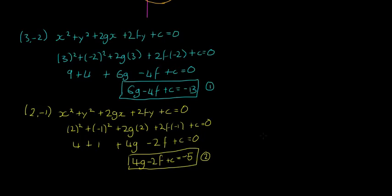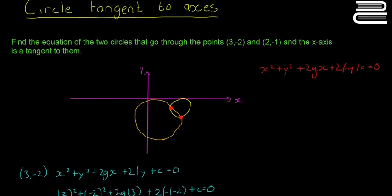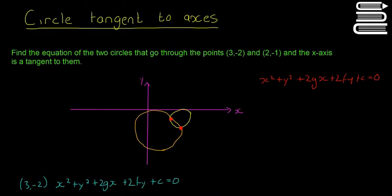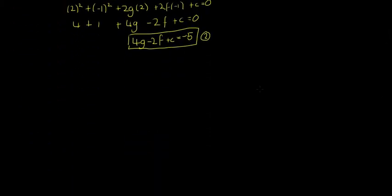Now we need to use the final piece of information — that the circle is tangent to the x-axis — to find another equation so we can solve for g, f, and c. I'm going to scroll down and show you how we're going to do that.